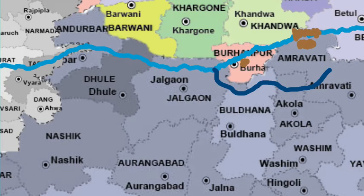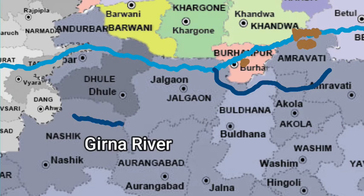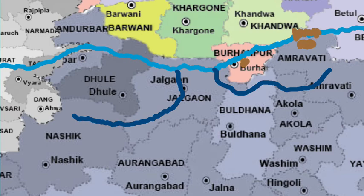Another major tributary is the Girna river, which flows from the Nasik district and joins river Tapi in the Jalgaon district. The Girna river is important because it has the Chankapur dam, which was built by the British and is one of the largest dams in Maharashtra even till date.